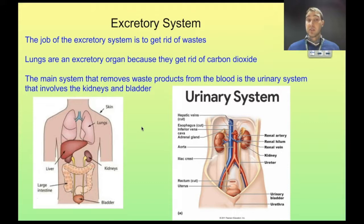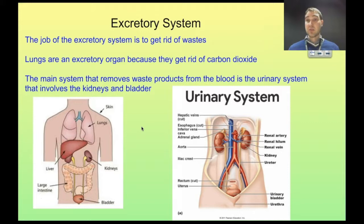So let's talk about the excretory system. The job of the excretory system is to get rid of wastes. There are many aspects to the excretory system, and many organs and structures from many different systems contribute to it. For example, lungs are an excretory organ because they help get rid of waste — in this case the waste is carbon dioxide.